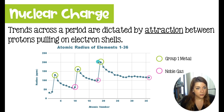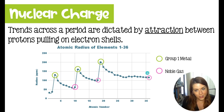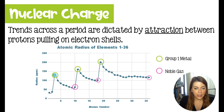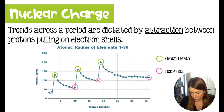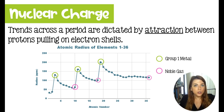Any trends across a period are dictated by the attraction between all the protons pulling on the electron shells. Highlighted in green are group one metals, and in pink are noble gases. Going from the group one metal to the noble gas across a period, the radius is shrinking because we have more protons pulling on that outer energy level, pulling it in tighter and tighter with each additional proton.